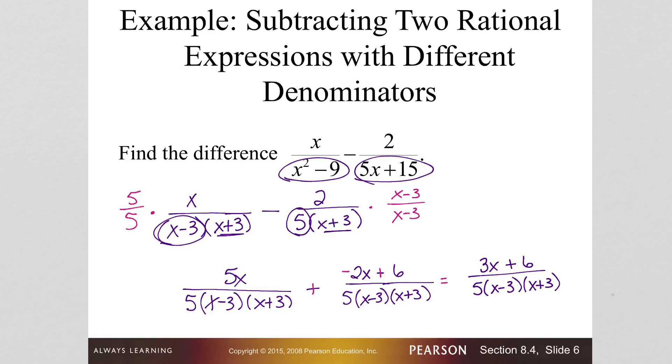I'm running out of space here. I need to factor my numerator, so this will become 3 times x plus 2. Nothing reduces, so really I could have left this as 3x plus 6 over 5 times x minus 3, x plus 3. So we are done.